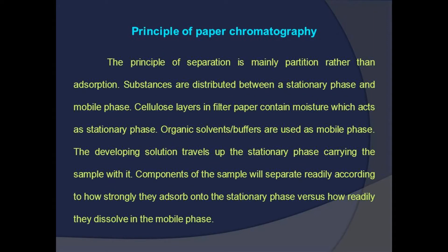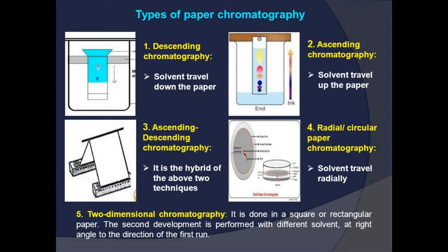Let us understand the principle of paper chromatography. The principle of separation is mainly partition rather than adsorption. Substances are distributed between a stationary phase and a mobile phase. Cellulose layers in filter paper contain moisture which acts as the stationary phase. Organic solvents or buffers are used as the mobile phase. The developing solution travels up the stationary phase carrying the sample with it. Components of the sample separate according to how strongly they adsorb onto the stationary phase versus how readily they dissolve in the mobile phase.